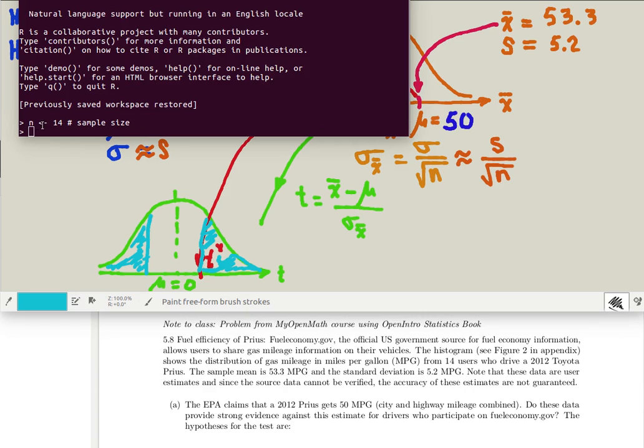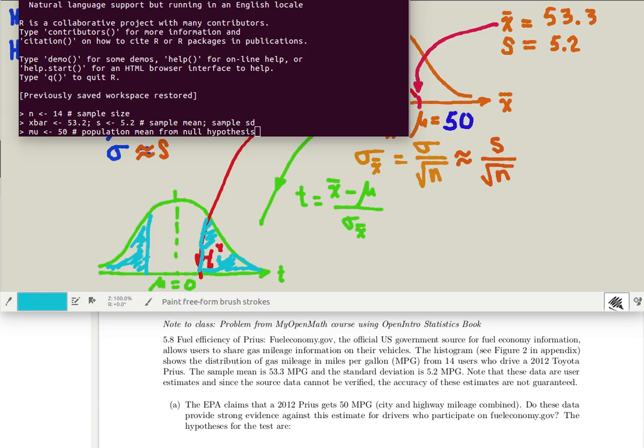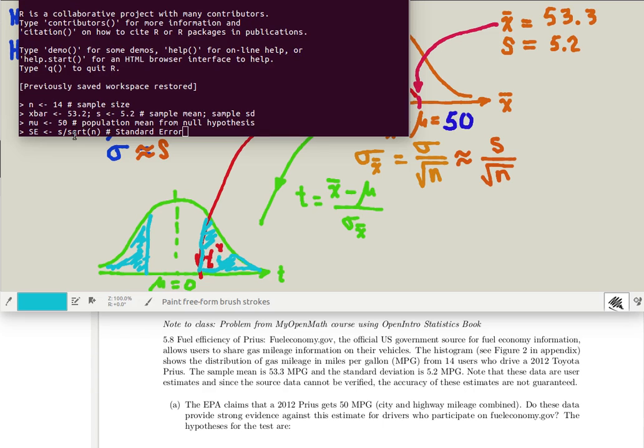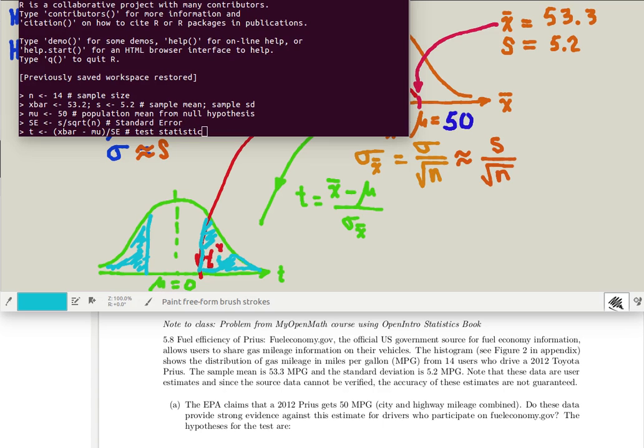So we're going to assign 14 to the object N, that's our sample size. We'll calculate the sample mean and the sample standard deviation. Now notice you can put more than one command on the same line if you just separate them by a semicolon. We'll need the population mean from the null hypothesis. We'll calculate our estimate for the standard error for the standard deviation of the distribution of sample means. We'll find the test statistic by looking at our x bar, the 53.3 minus the mu divided by the standard error.